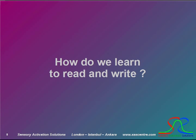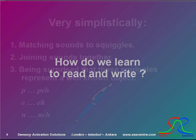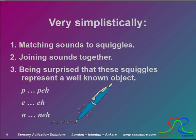How do we learn to read and write? It is, of course, a very complex process. But put very simplistically, you could say that first you learn to match funny squiggles, which adults call letters, to certain sounds like P. Then you have to join those sounds together to form a word like P, E, N — Pen. Then you are really surprised that those squiggles represent a well-known object, like a pen in this case.